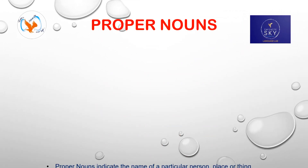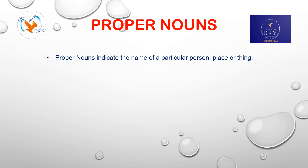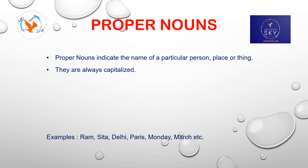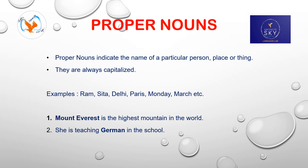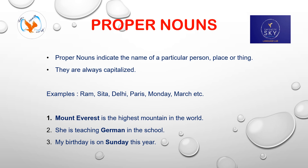Proper nouns indicate the name of a particular person, place or thing. They are always capitalized. Some proper noun examples are: Ram, Sita, Delhi, Barry, Monday, March, etc. Let's understand them with sentences: 'Mount Everest is the highest mountain in the world.' 'She is teaching German in the school.' 'My birthday is on Sunday this year.' For better understanding, proper nouns are marked in bold.